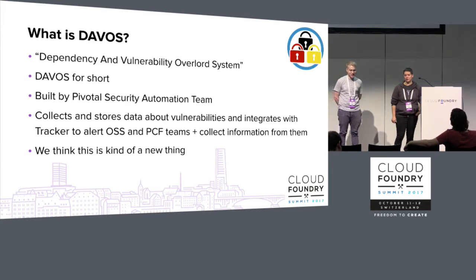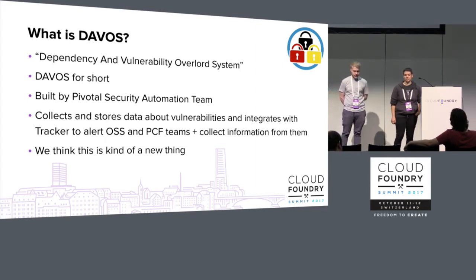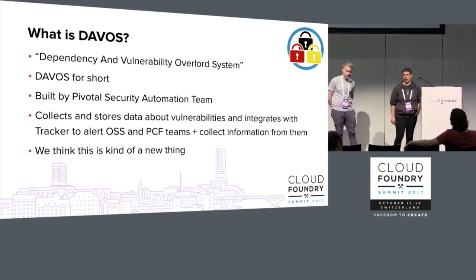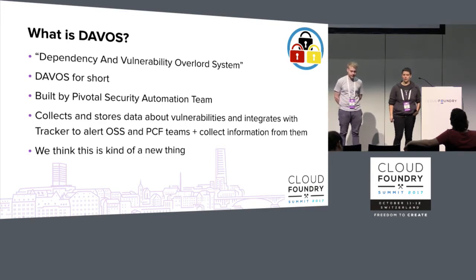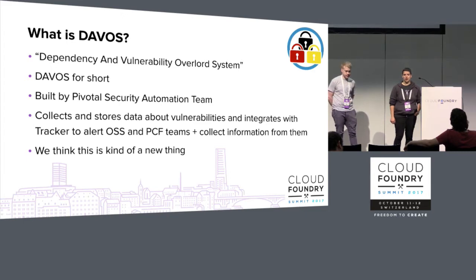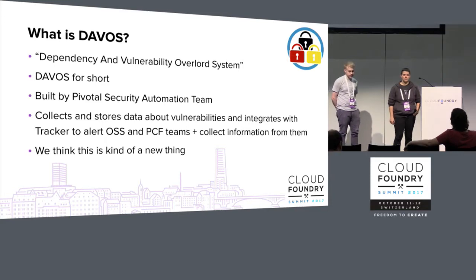Davos was built by the Pivotal Security Automation Team over the past 10 months or so. We got started at the beginning of this year. In a nutshell, it collects and stores data about vulnerabilities and integrates with Tracker to alert both open source and commercial teams from Pivotal about vulnerabilities, and to collect information back from them about whether or not they're vulnerable and what versions they've fixed. We're talking about this because we think this is a new thing — security management and vulnerability management specifically integrating with agile workflow.